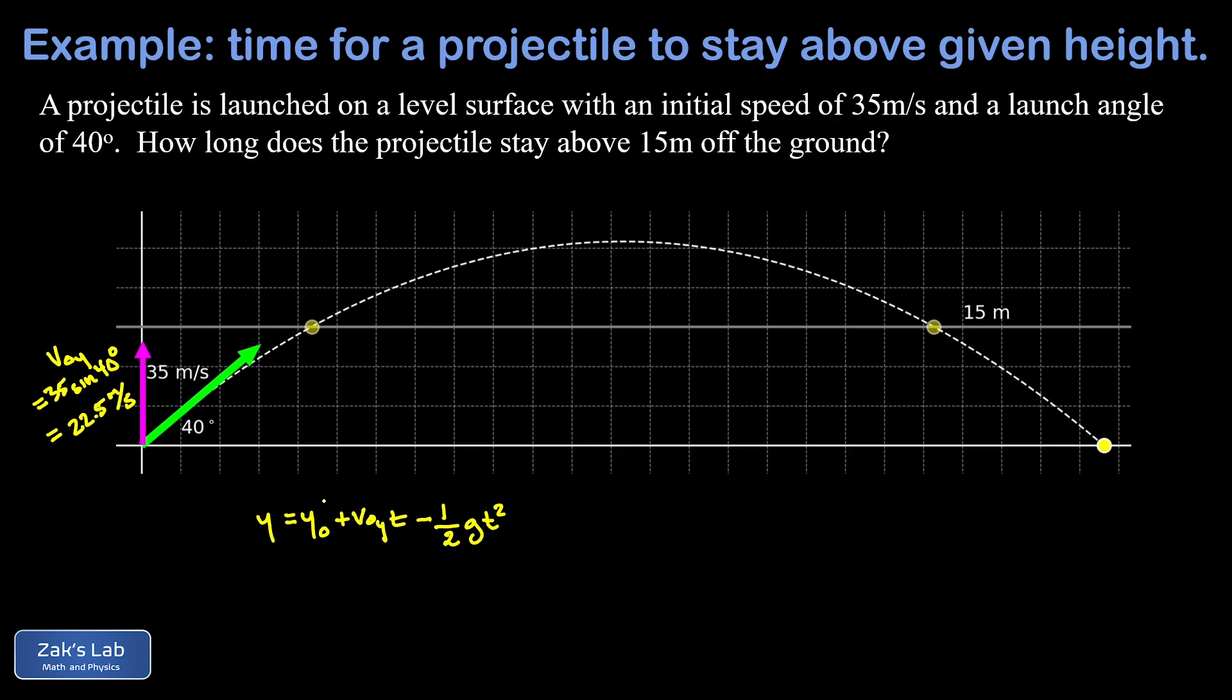So our initial position is zero, we're launching this thing from ground level. We've implicitly put the origin right there at the launch point. So we're interested in when this projectile reaches a height of 15 meters.